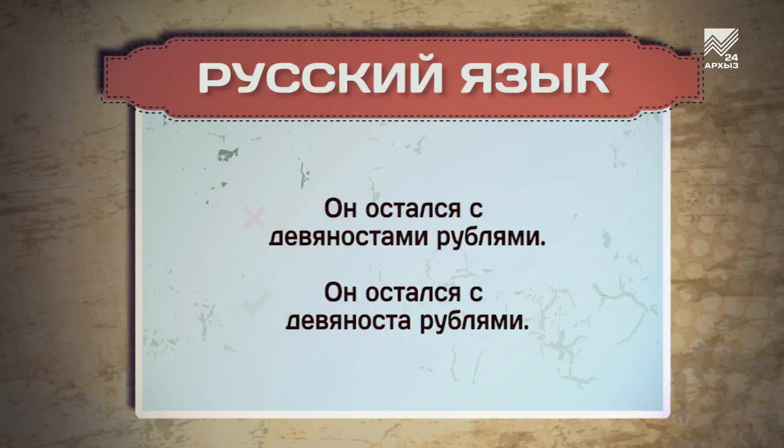Он остался с 90 рублями. Важно запомнить, что у числительных 40, 90 и 100 существует только две формы. В именительном и винительном падежах будет 40, 90 и 100, а во всех остальных — 40, 90 и 100. Поэтому никаких «90», «40» и тому подобного.